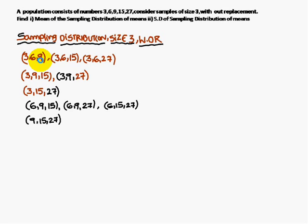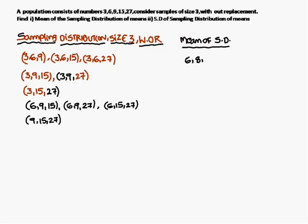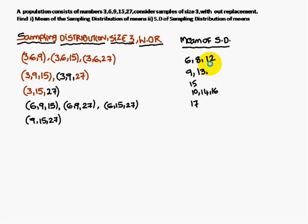Total pairs formed are 10. Now for each combination we find the mean. For 3, 6, 9: the mean is (3+6+9)/3 = 18/3 = 6. For 3, 6, 15: (3+6+15)/3 = 24/3 = 8. Similarly, you calculate the average for each of the 10 pairs to get the sampling distribution of means.